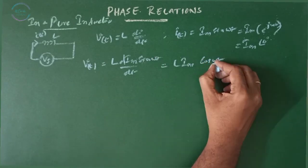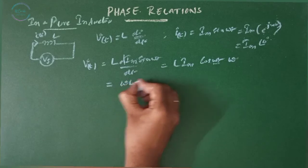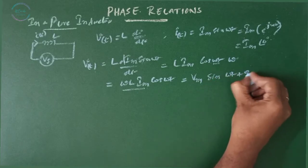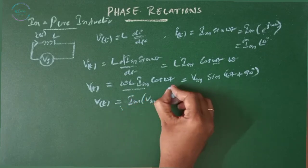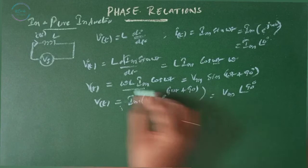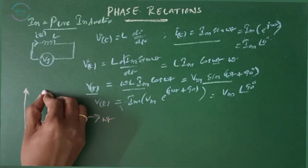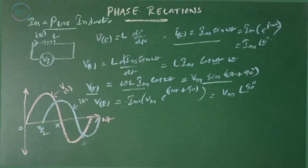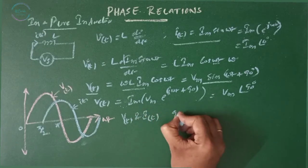Differentiating sin(ωt) with respect to t gives ω·cos(ωt). That implies V(t) = ωL·Im·cos(ωt). Since cos(ωt) = sin(ωt + 90°), we can write V(t) = Vm·sin(ωt + 90°), where Vm = ωL·Im. In imaginary terms: Im{Vm·e^(j(ωt+90°))} or Vm∠90°. From this, both V(t) and I(t) are out of phase, having a phase difference of 90°.